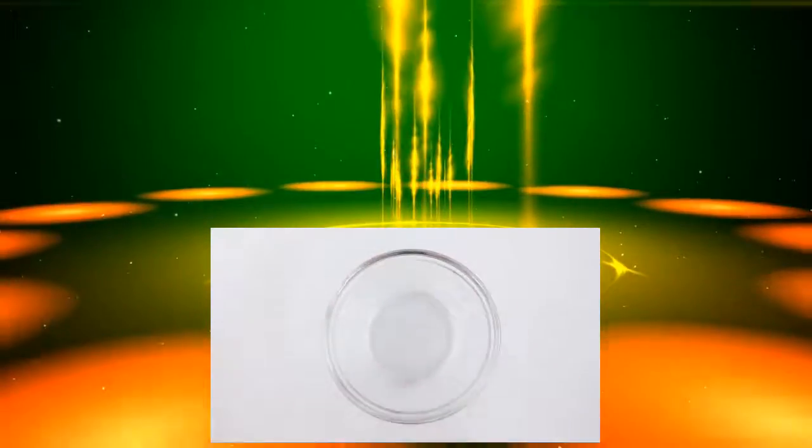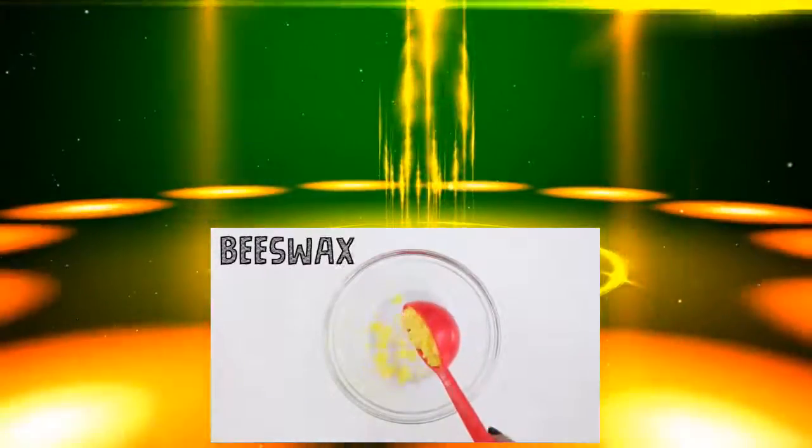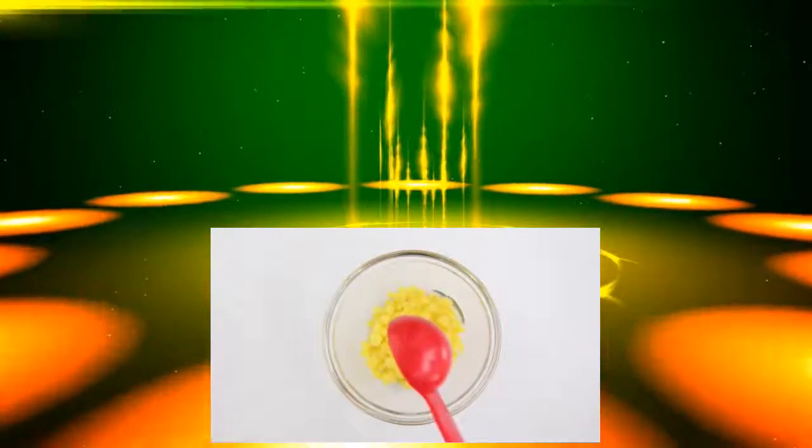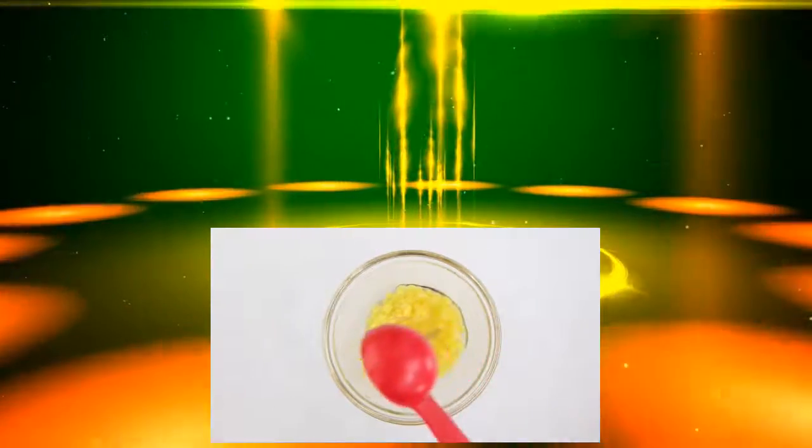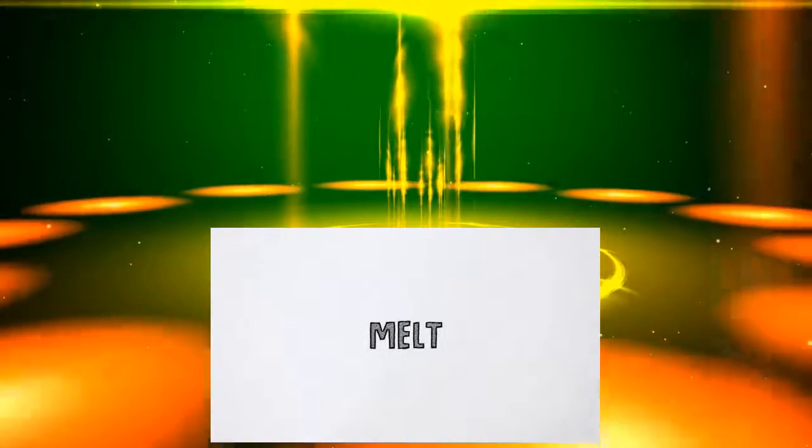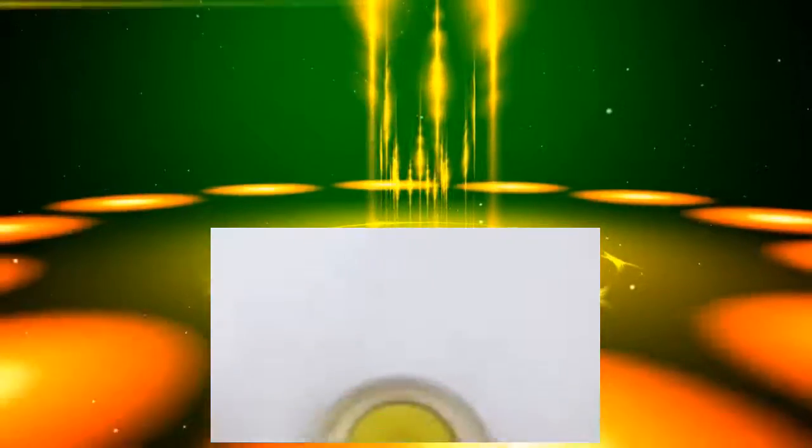For the actual lip balm, I took a bowl and I'm adding in two tablespoons of beeswax. Then I'm going to add two tablespoons of sweet almond oil, but you can also use coconut oil, olive oil, whatever you prefer. Basically you want to add equal parts of each. Melt this in the microwave or on a double boiler.